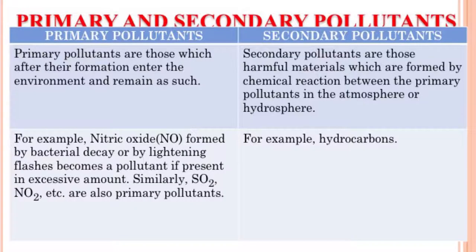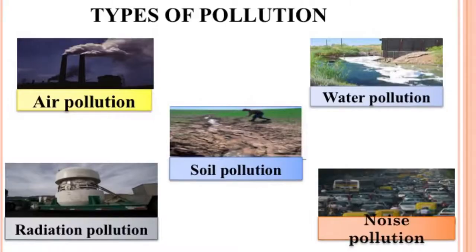What are primary pollutants and secondary pollutants? Primary pollutants are those which, after their formation, enter the environment and remain as such. For example, nitric oxide, which is formed by bacterial decay or by lightning flashes, becomes a pollutant if present in excessive amounts. Similarly, sulphur dioxide, nitrogen dioxide, etc. are all primary pollutants. On the contrary, secondary pollutants are those harmful materials which are formed by chemical reactions between primary pollutants in the atmosphere or in the hydrosphere. For example, hydrocarbons. These pollutants are responsible for causing different kinds of pollution.